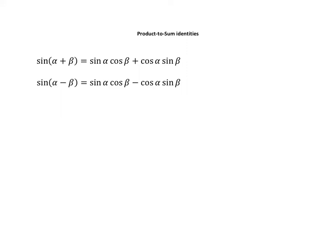In this lesson, we're going to go over a few more identities, starting with the product-to-sum identities. As the name implies, it's going to allow us to take a product of sines and cosines and change it into a sum.